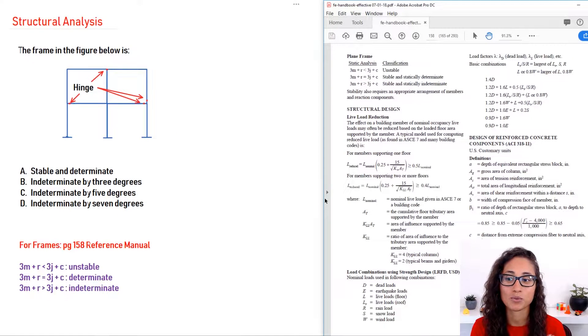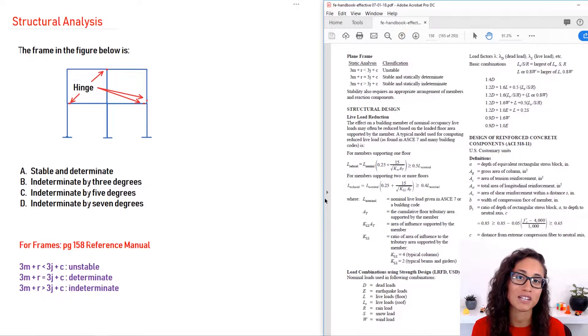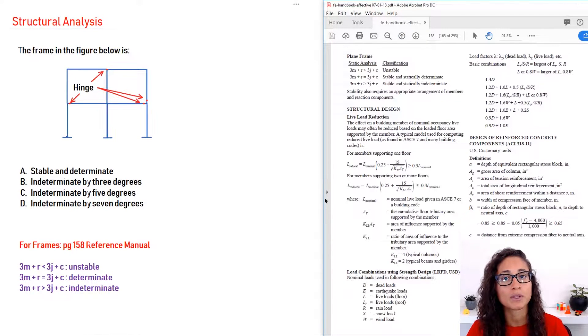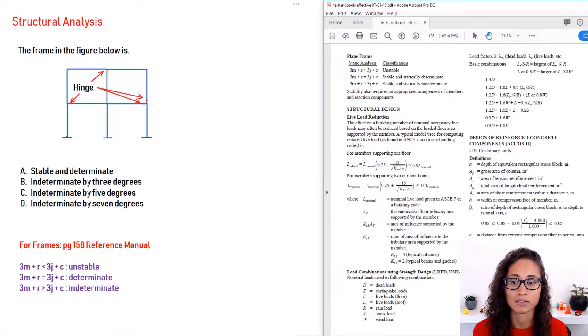So we're given a frame and we need to determine if it's determinate or indeterminate and by how many degrees. We did a problem similar to this using a truss and a beam. If you haven't watched those videos, I will leave the link above. But this problem is actually a little bit trickier. The equation for this is provided to you on the reference manual, page 158. You have here the frame equations.